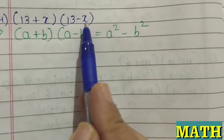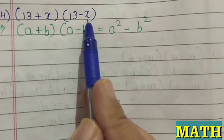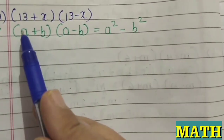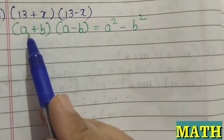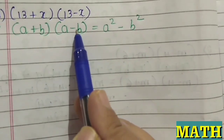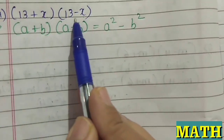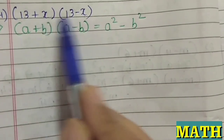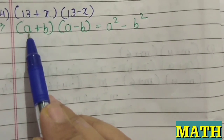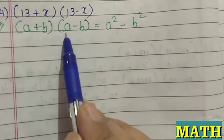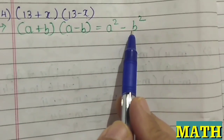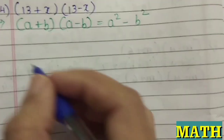This is another example, quite different from the previous two. This is in the form (a+b)(a-b), where these two terms are common. So you are supposed to use the expansion formula: (a+b)(a-b) = a²-b². It is very easy and simple.